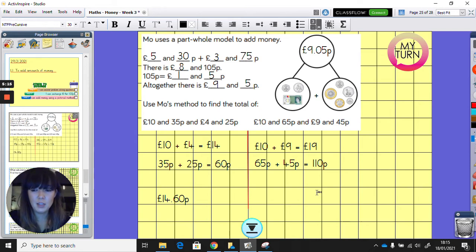So 110p becomes... Let me pop it underneath. 110p becomes £1.10p. So then we need to add up our pounds, and our pounds here. So £19, add £1 and 10p, will be £20 and 10p. That one is a lot harder.